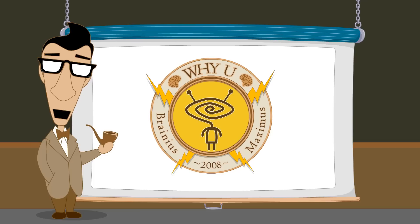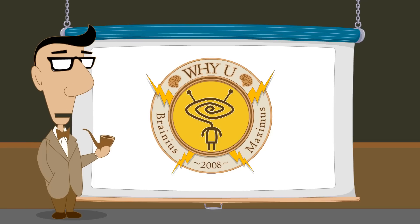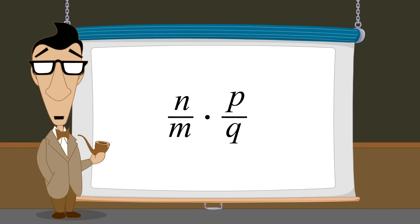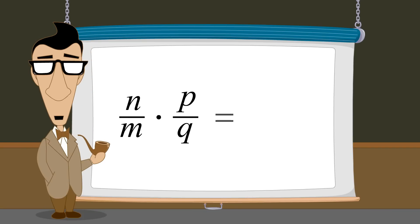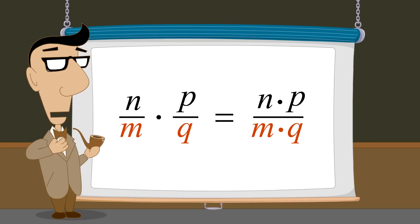Hello, I'm Professor Von Schmohawk, and welcome to Why U. In the last lecture, we saw how fractions are multiplied. When multiplying fractions, the numerators are multiplied to create the numerator of the result, and the denominators are multiplied to create the denominator of the result.